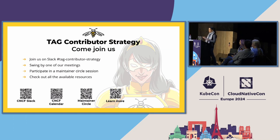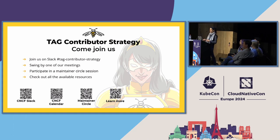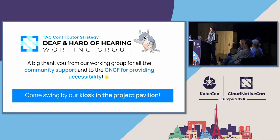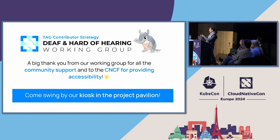That's all for today. Here are a few ways to get in touch or learn more. You can join our Slack channel, pop into one of our meetings, or participate in the maintainer circle. We have lots of resources, so check those out. The deaf and hard-of-hearing working group has a kiosk in the mornings — we'd love for you to swing by and say hi. And I think we're ready for Q&A.